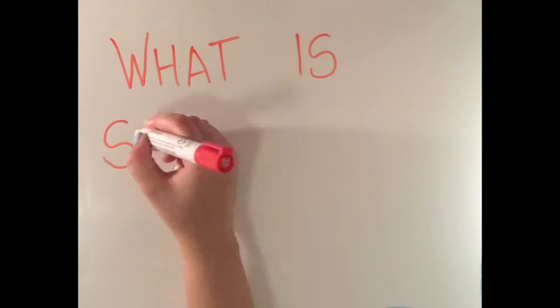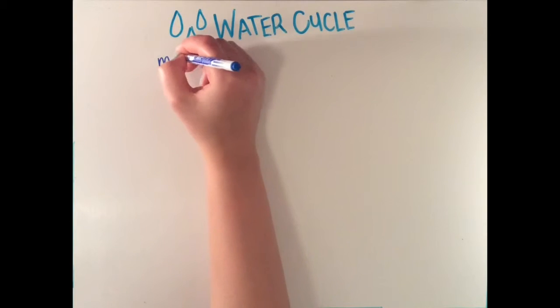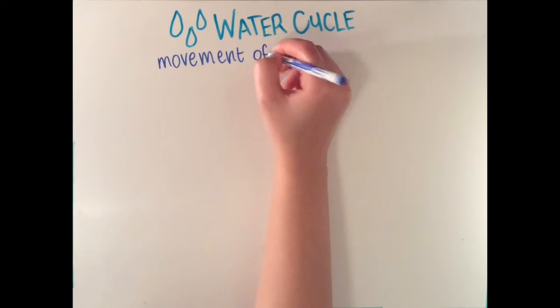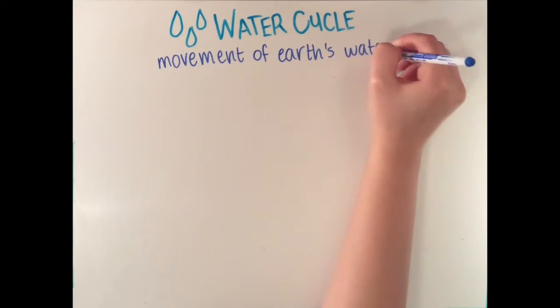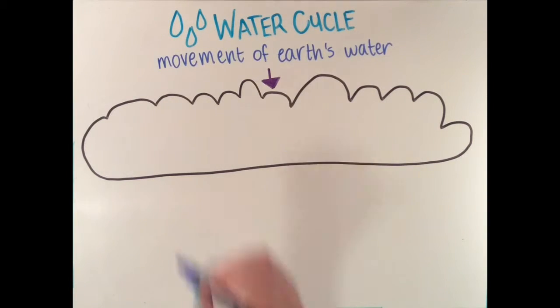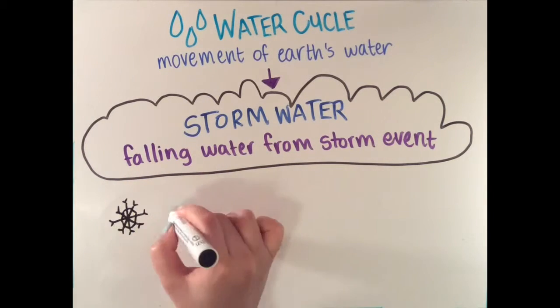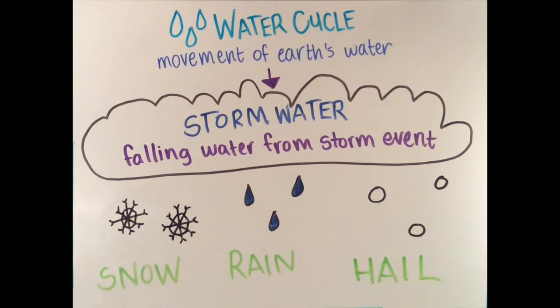What is stormwater runoff? Many of you are probably familiar with the water cycle, which describes how water moves on, under, and above the surface of the earth. A very important part of the water cycle involves looking at what happens to stormwater, which is any type of water that falls to the ground during a storm event, like snow, rainwater, or hail.